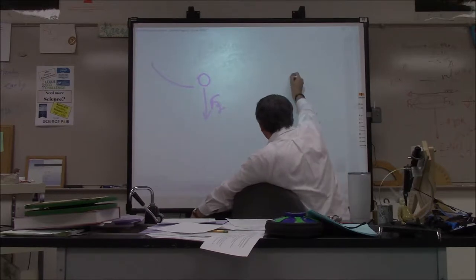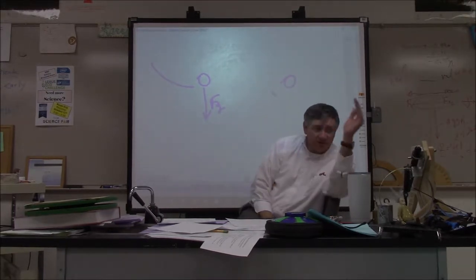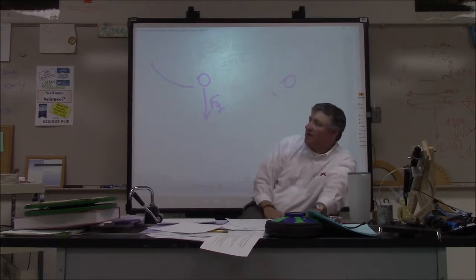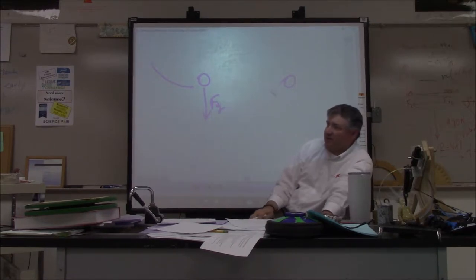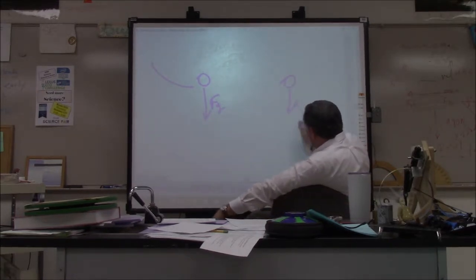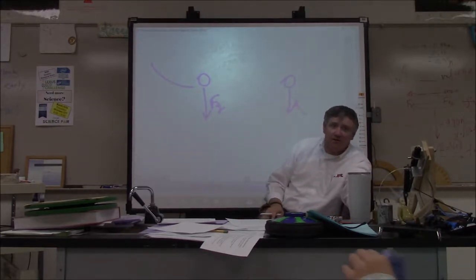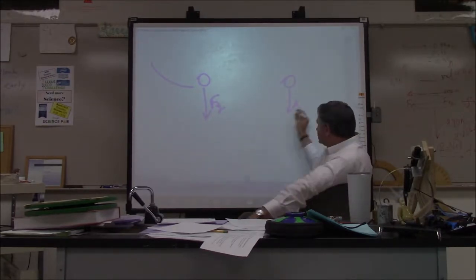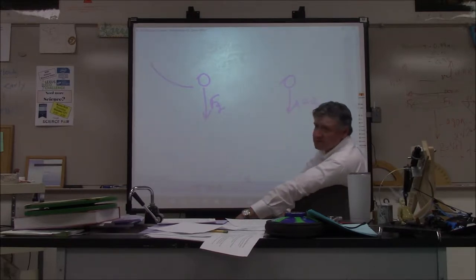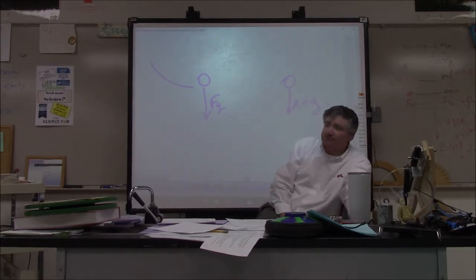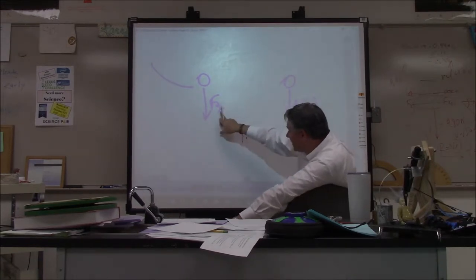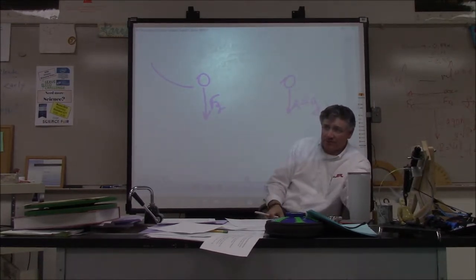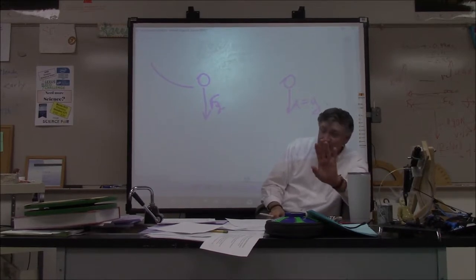The next thing you want to draw is the acceleration vector. This is where one drives the other. If this is the direction of my force vector, what's the direction of my acceleration vector? Pointing straight down. What's the value of that acceleration? Negative 9.8. Your acceleration is caused by gravity. Whatever happens with this unbalanced force is what drives your acceleration vector. It's simple, but it's a very profound truth.